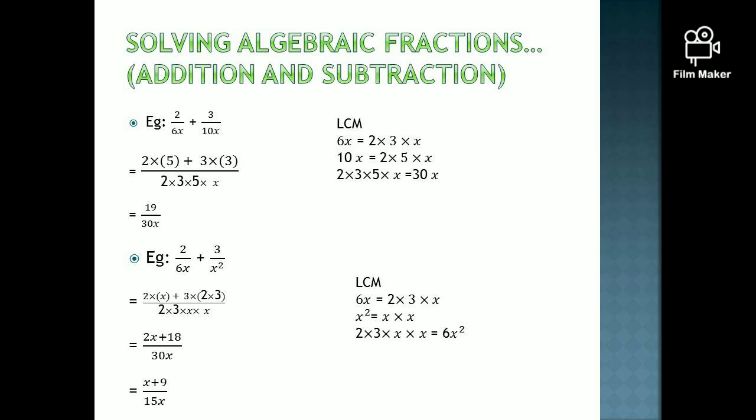In this example, we have to add 2 over 6x plus 3 over 10x. Initially identify the LCM of 6x and 10x. 6x is 2 into 3 into x and 10x is 2 into 5 into x. If you select the common terms and the remaining terms, the LCM would be 2 into 3 into 5 into x, that is 30x. When you write the denominator in the next step, write this expansion version.